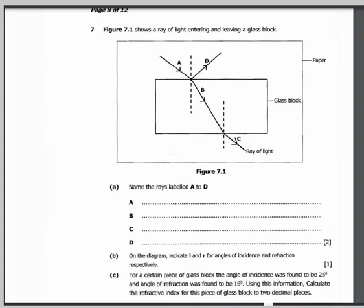The question states: Figure 7.1 shows a ray of light entering and leaving a glass block. We have this figure. Name the rays labeled A to D.